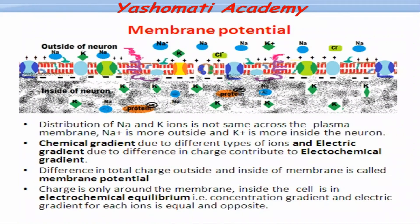When the axon is in resting state, the membrane has more positive charge towards the outer side and negative charge towards the inner side. The concentration of sodium and potassium ions is also different on the outer and inner side. Both sodium and potassium are positively charged ions, but sodium ions are more towards the outer side and potassium ions are more towards the inner side.